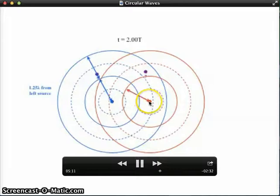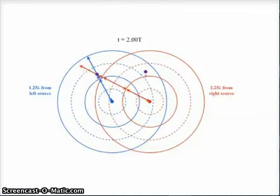Now let's measure from the right. We've got one wavelength, two wavelengths, about two and a quarter wavelengths from our right wave source.